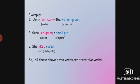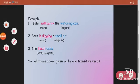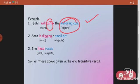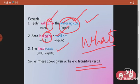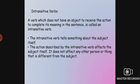'John will carry the watering can' — the verb is 'carry' and 'watering can' is the object. 'Sarah is digging a small pit' — what is she digging? A small pit. 'She liked roses' — what did she like? Roses. So 'carry,' 'digging,' and 'liked' are all transitive verbs because they are received by objects: watering can, small pit, and roses.